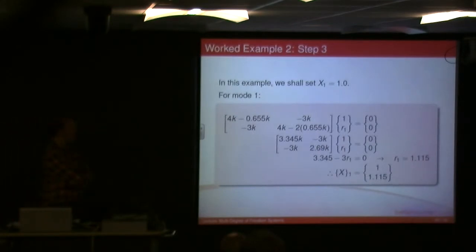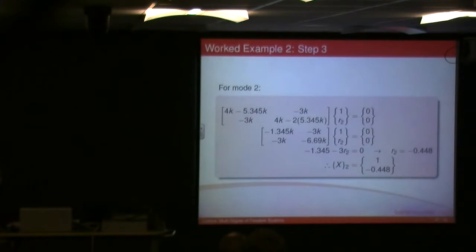And we go through, and this time I've set x1 to be 1 to find the mode shape. So there's the first mode shape, 1 and 0.115. And the second mode shape is 1 and minus 0.448. So again, two masses moving in the same direction, different amplitudes. And the other mode is them moving in opposite directions. So there's my two mode shapes.